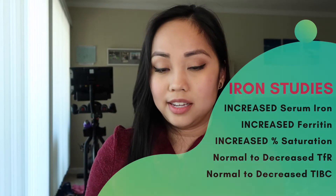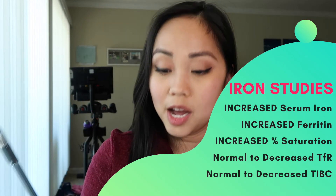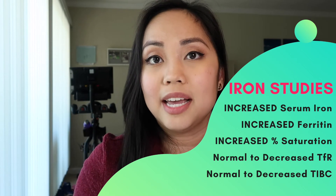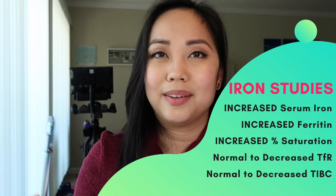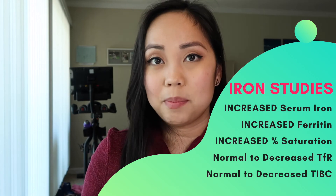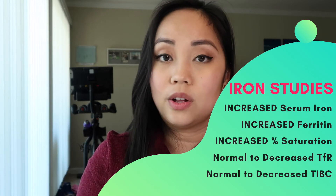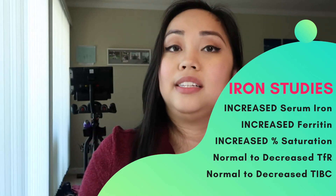You also get basophilic stippling as mentioned earlier. For iron studies: serum iron is up, ferritin is up, TIBC is normal to decreased, percent saturation is up, and transferrin receptor is also normal to decreased — same as the TIBC.